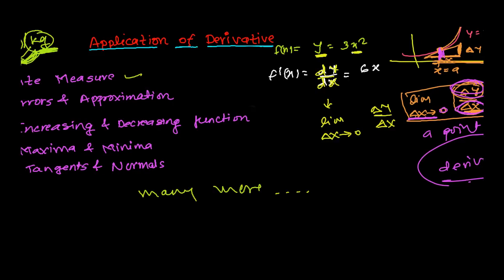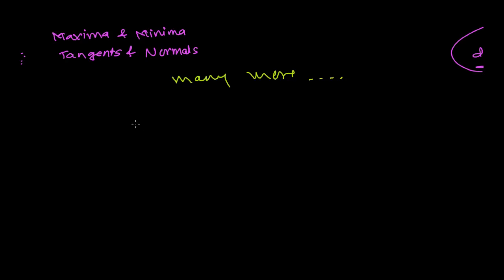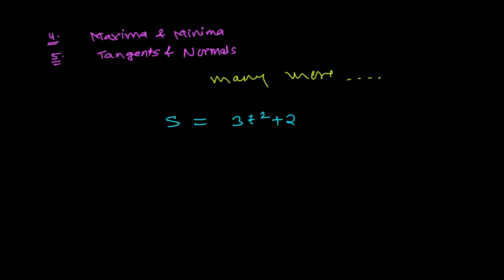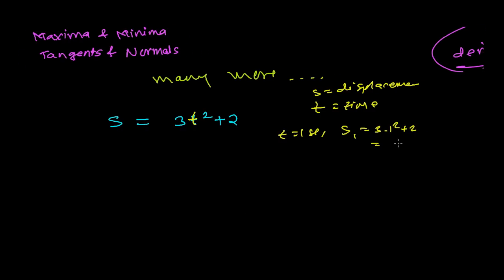If the derivative is the rate of change of a function, how can we apply this? Let me give a short example. Say S represents displacement, given by S = 3t² + 2, where t is time. When t = 1 second, displacement S₁ = 3(1)² + 2 = 5 meters. When t = 2 seconds, S₂ = 3(4) + 2 = 14 meters. When t = 3 seconds, S₃ = 3(9) + 2 = 29 meters.